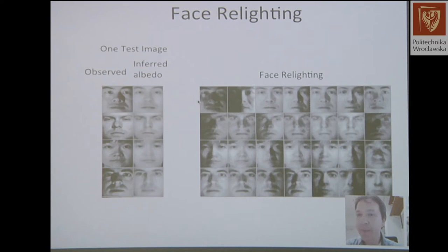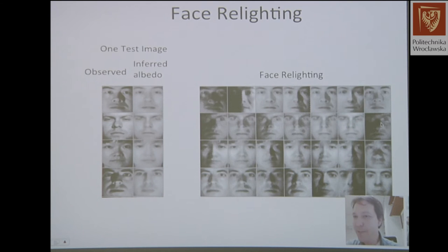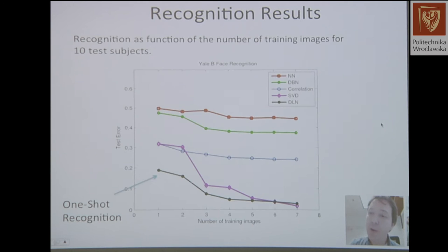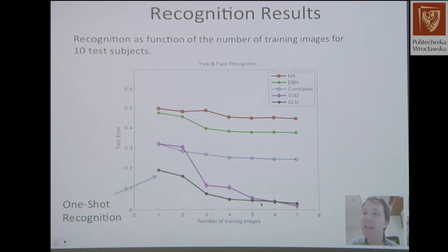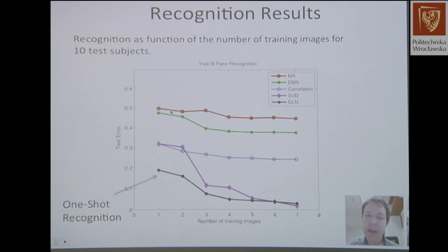Because of the generative model, you can do fun things like face relighting — based on a single example, this is what the person would look under different illumination conditions. For one-shot recognition with a single example, the SVD model without priors doesn't do as well with one or two examples but catches up once you see five or six images. Nearest neighbor and deep belief networks that don't account for lighting variations perform quite poorly.